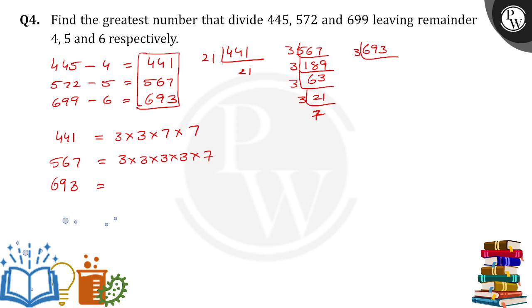693 divided by 3 is 231. Again, 231 divided by 3 is 77. So again, 7 into 11 is 77. 693 can be written as 3 into 3 into 7 into 11, okay?